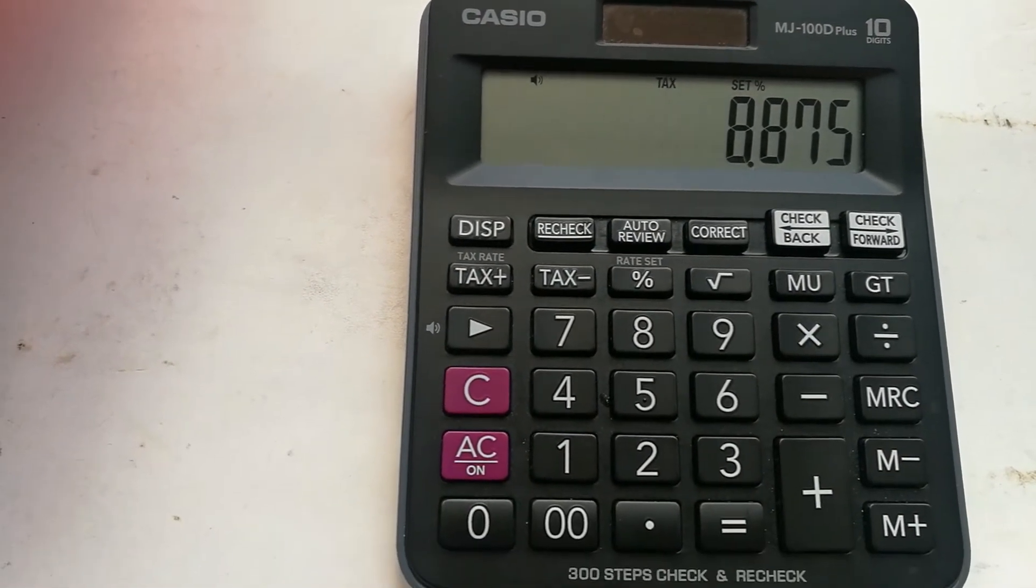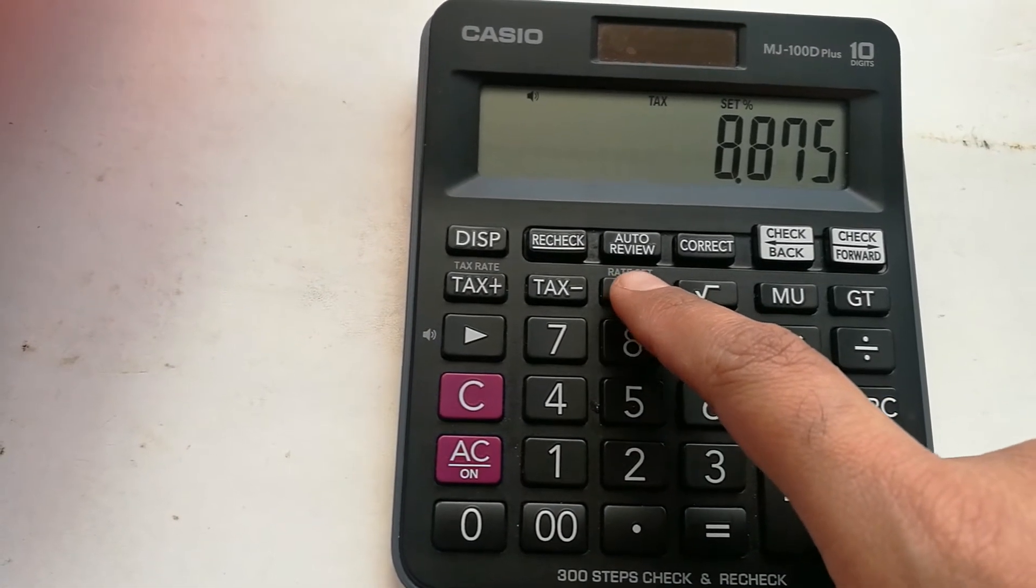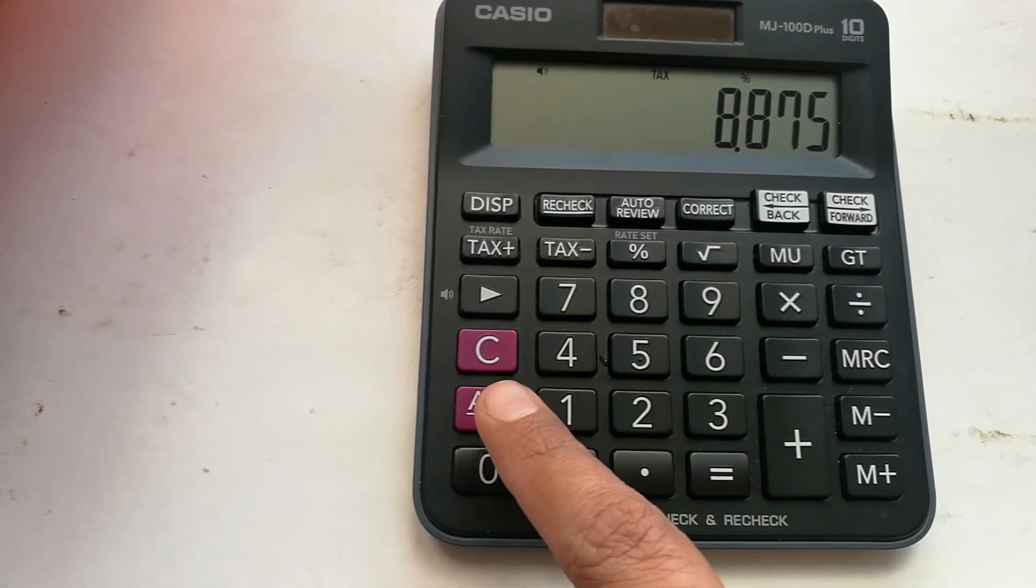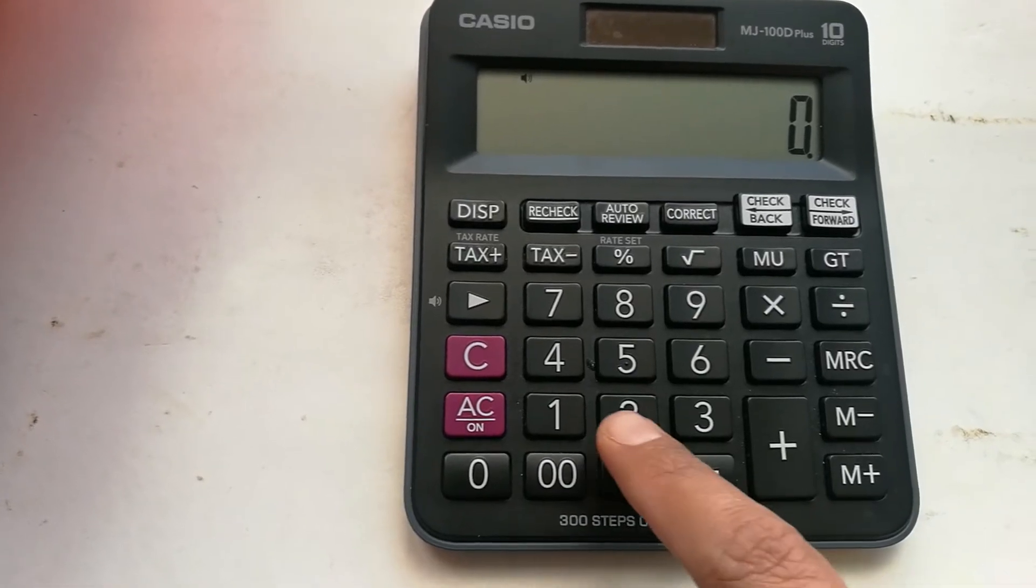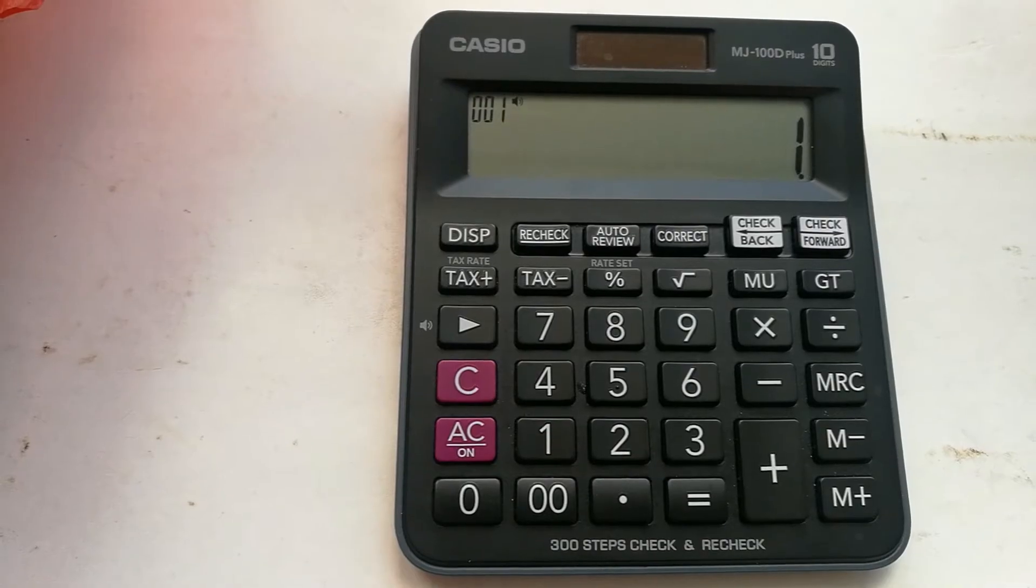And then I press the percent button again, but not for three seconds, just normal. So I press this button. Now this tax rate has been set. Now if you have any value and you want to check the tax rate of that value.